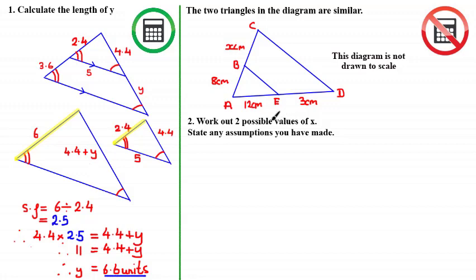It's a very subtle detail, but what helped us determine which sides were similar in the previous question were the parallel lines. The parallel lines let us see which angles were corresponding, which then helped us identify which sides were similar. However, in this question, other than being told the shapes are similar, the diagram gives us no information about the angles inside each shape — and since it's not drawn to scale, there's no point measuring angles with a protractor.